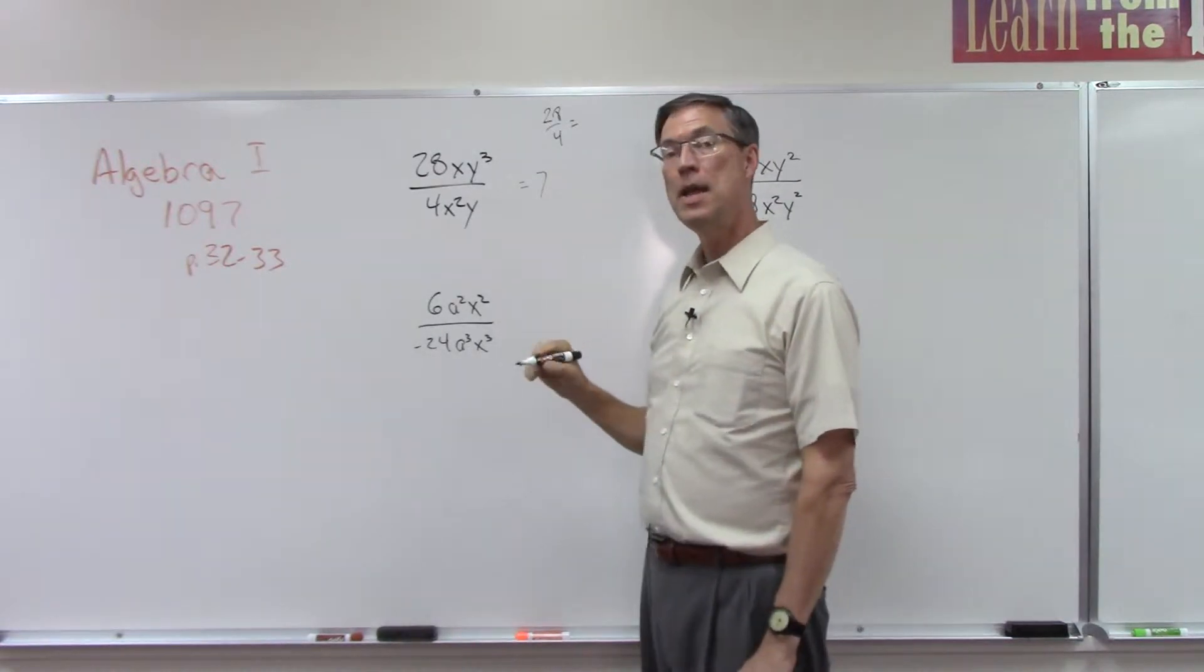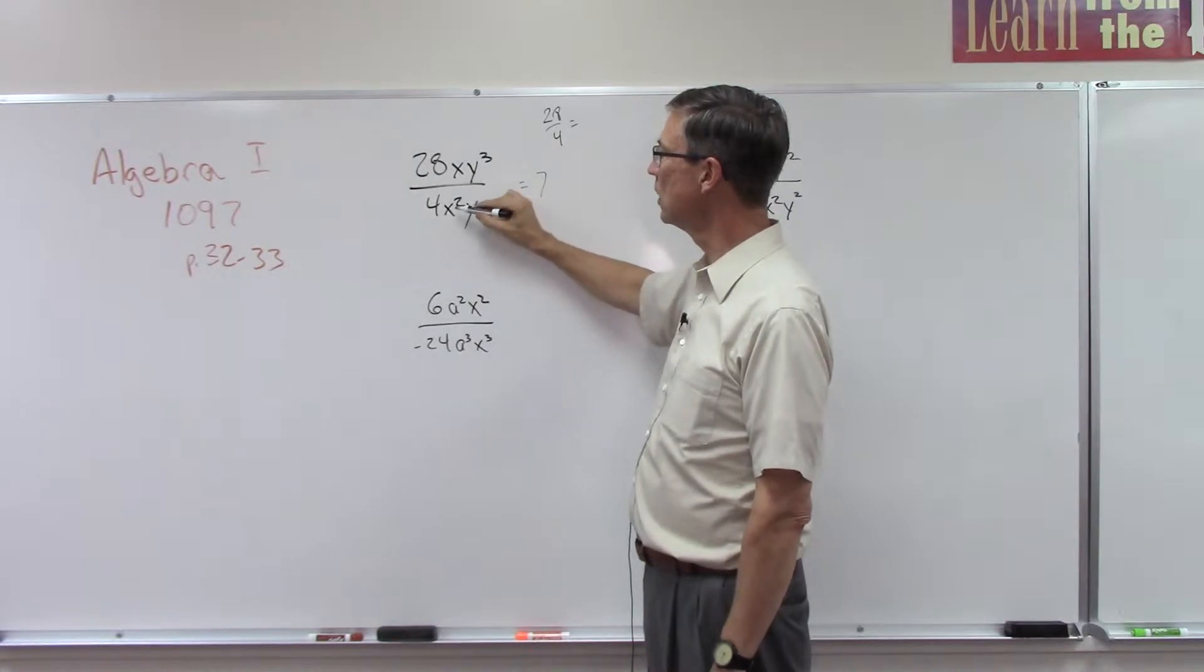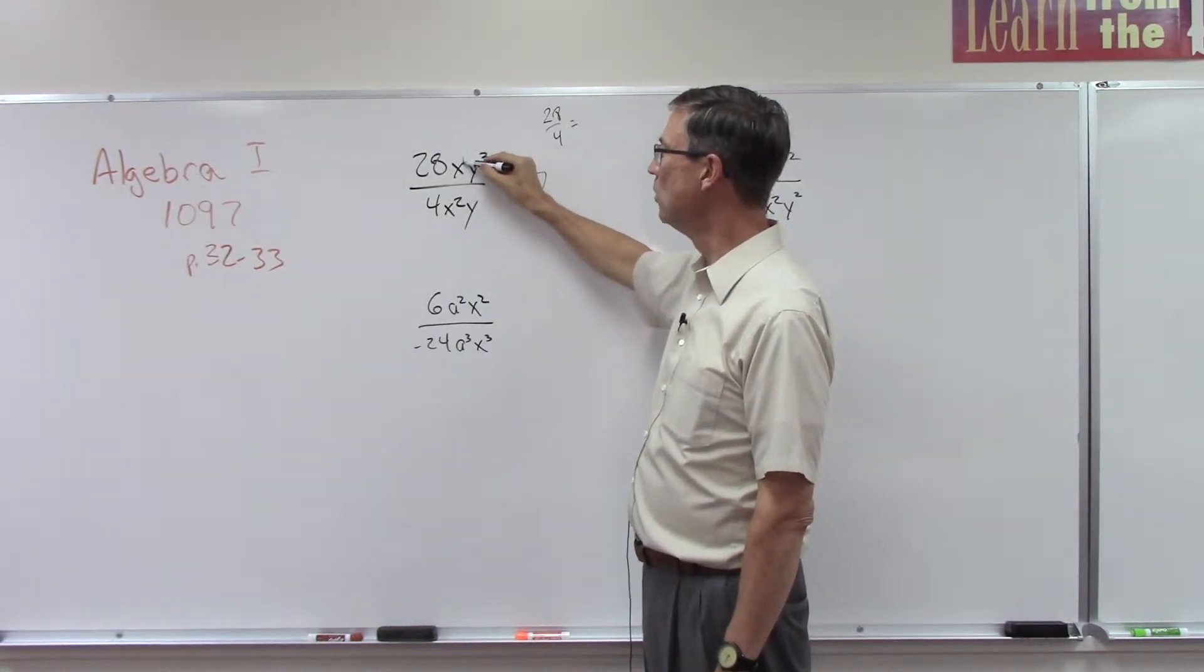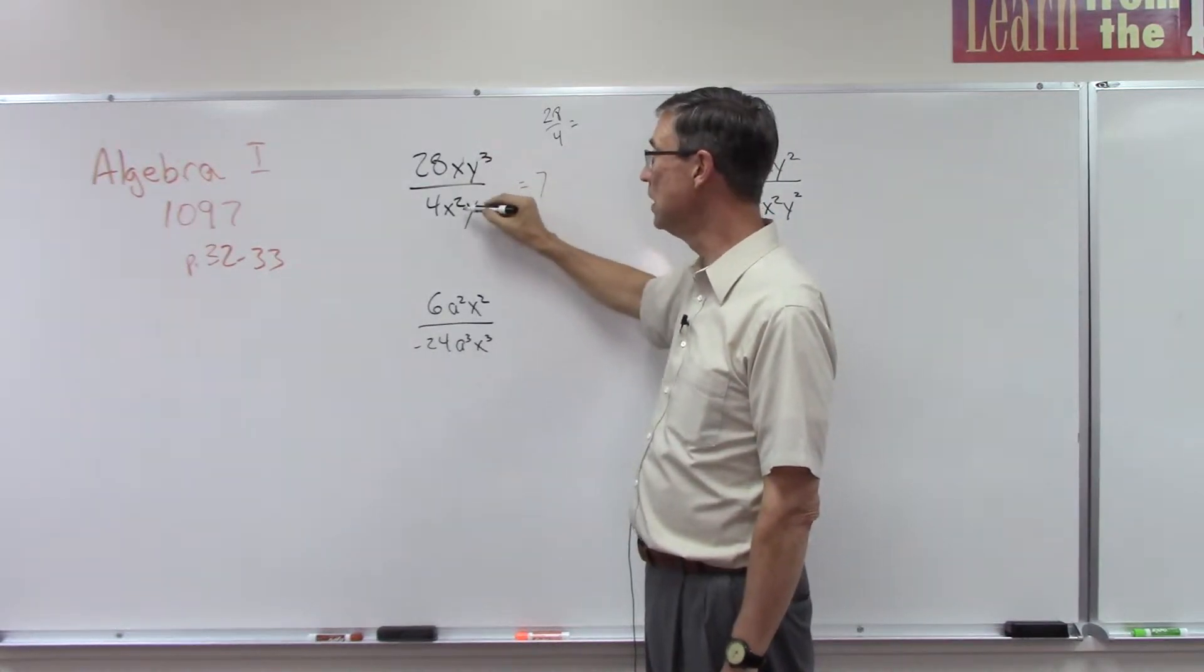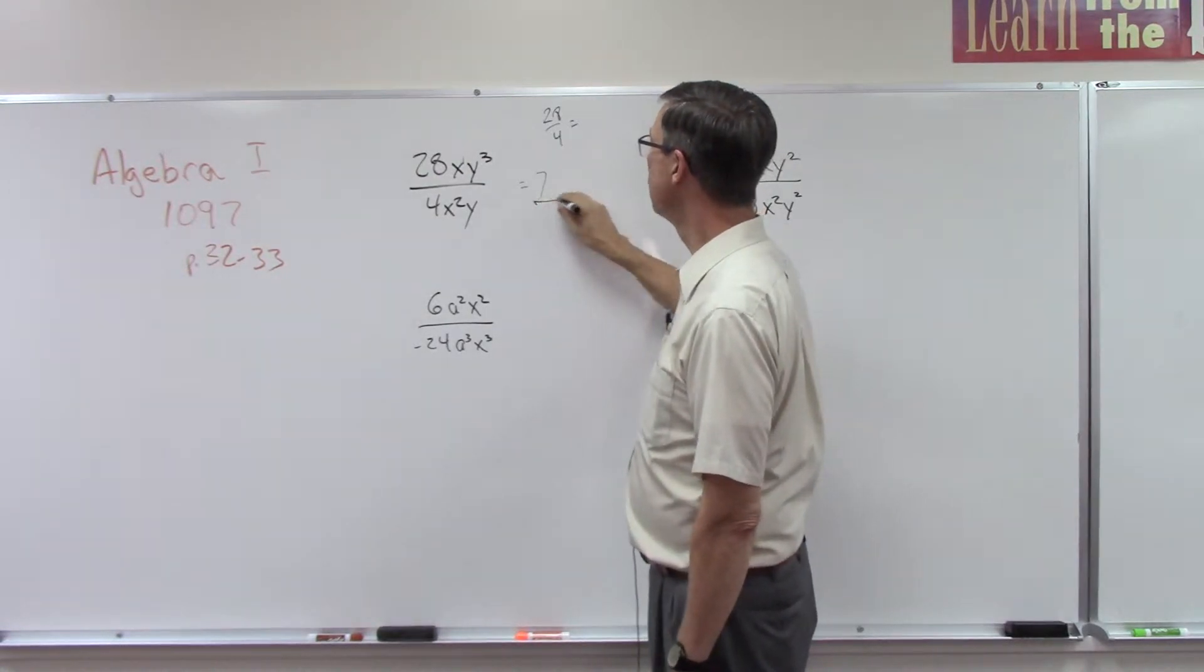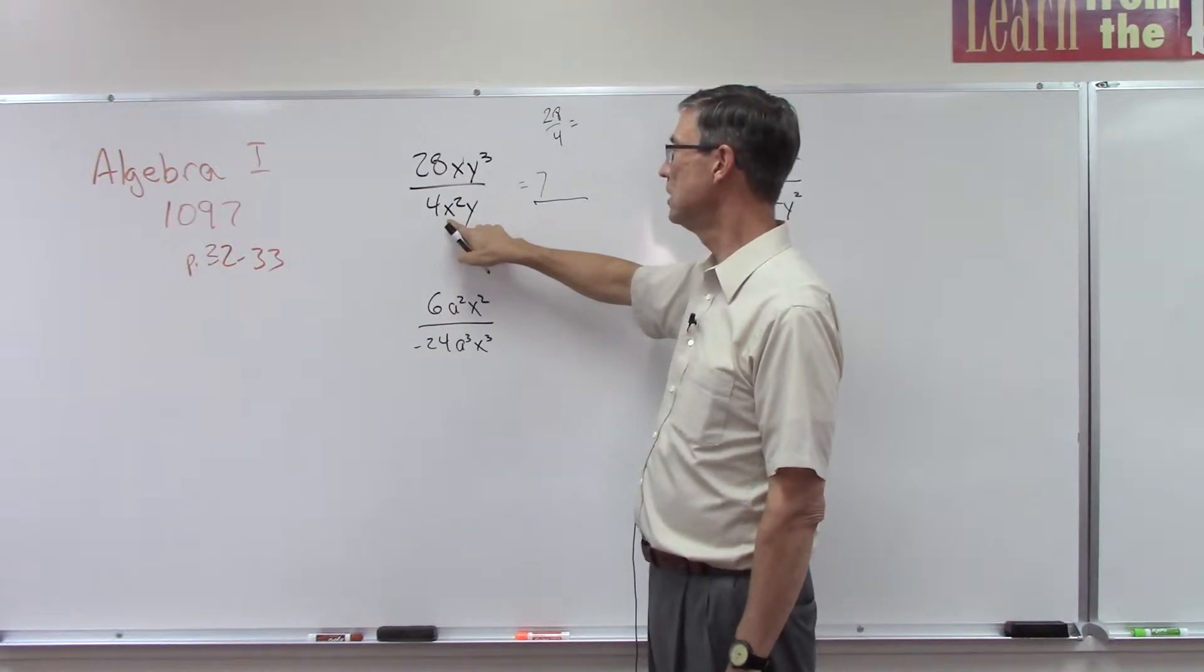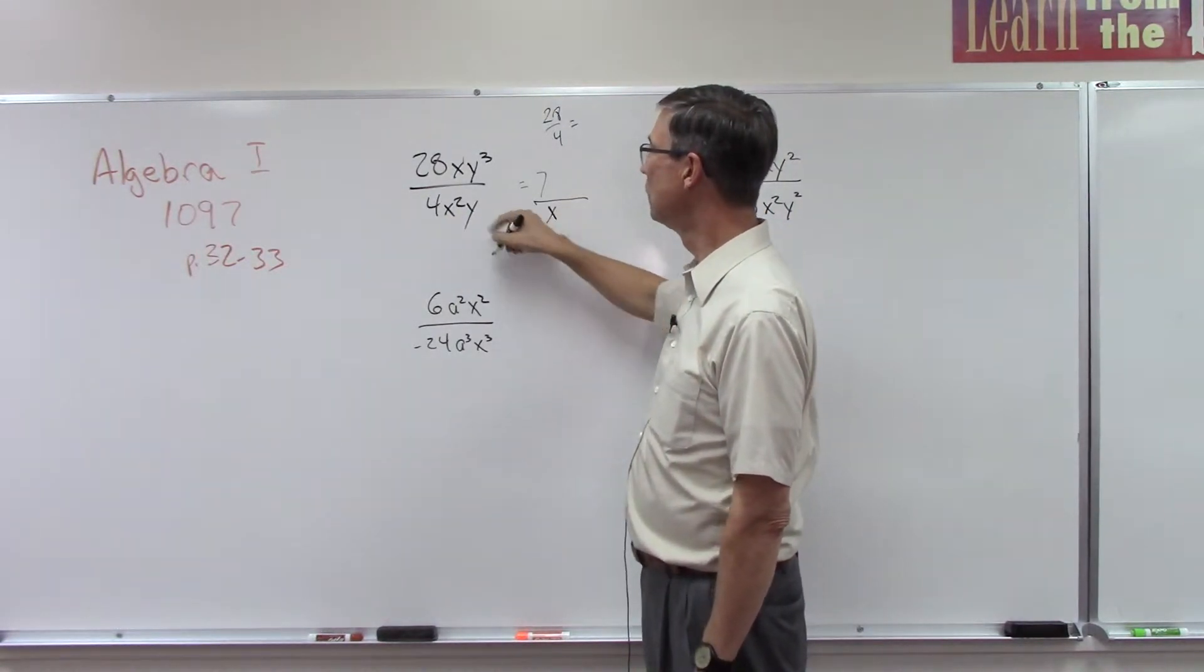Now the rule on page 32 says we're going to look at the two x's, subtract the smaller one which is 1 from the larger one. So 2 minus 1 is 1, but then I want to keep that on the denominator side because that's where I had the two x's. So we put the x down here.